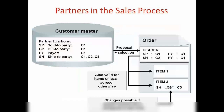Let's look at this slide. Whatever partners exist in the customer master are proposed during sales order creation. We can create different partner types in the customer master — sold-to party, bill-to party, ship-to party, payer, or something else — and all of them will be assigned to the order. When we create an order, the system copies all partners from the customer to the order. If you want, you can have a different partner at the item level; the item will take the partner function from the order header.